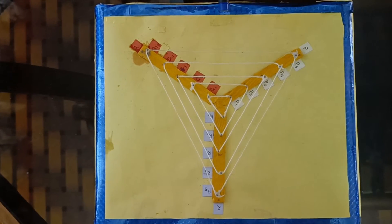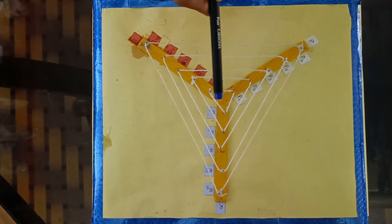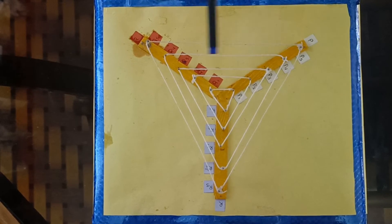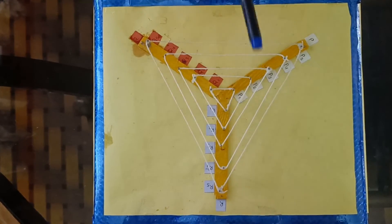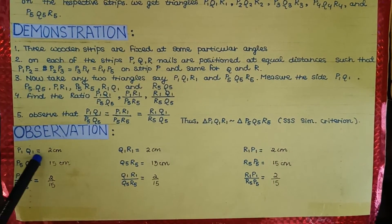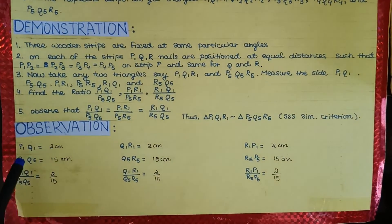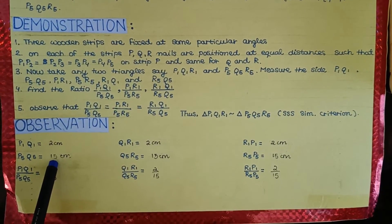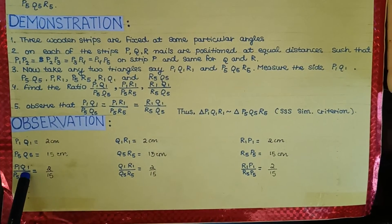Now let us take any two triangle sides: P1Q1R1 and P5Q5R5. Now on measuring the sides, we can see that P1Q1 is equal to 2 centimeters, P5Q5 is equal to 15 centimeters, so P1Q1 upon P5Q5 is equal to 2 upon 15.